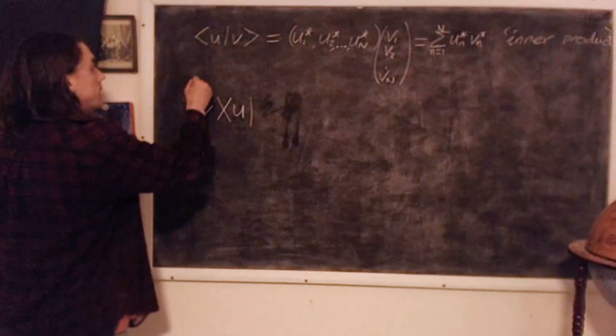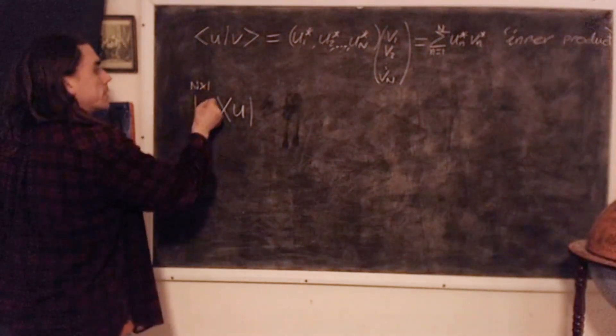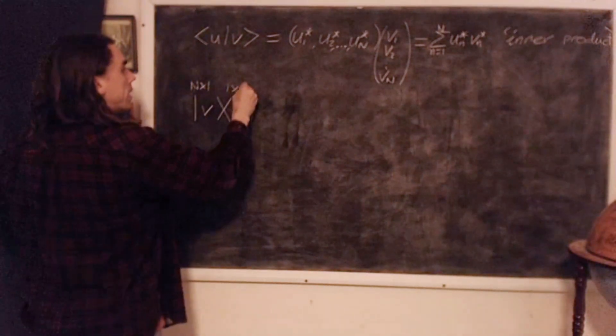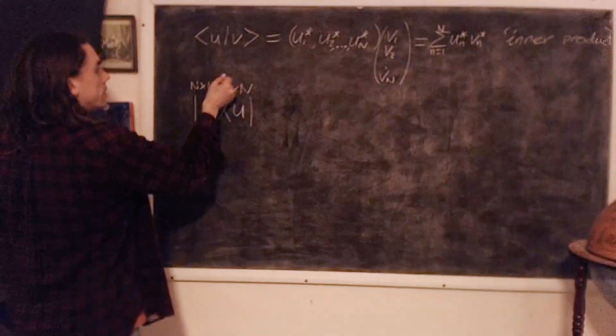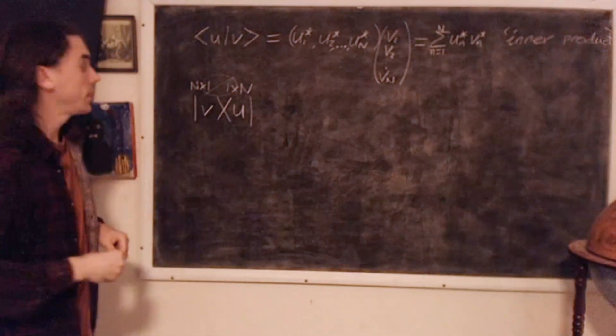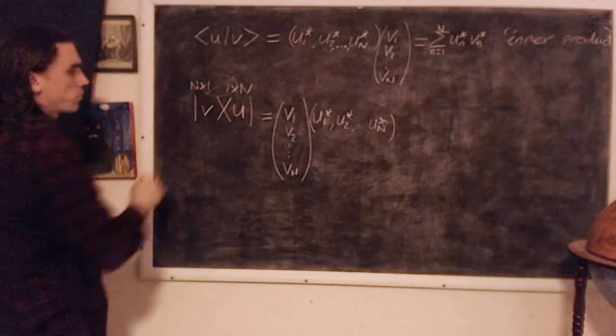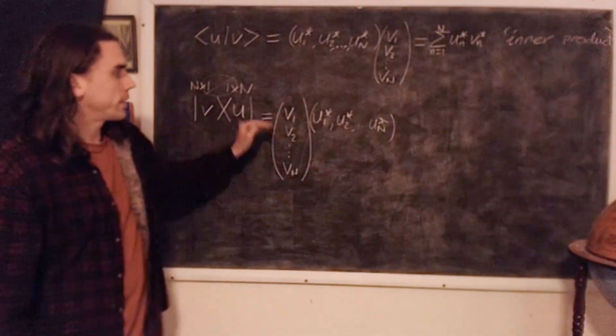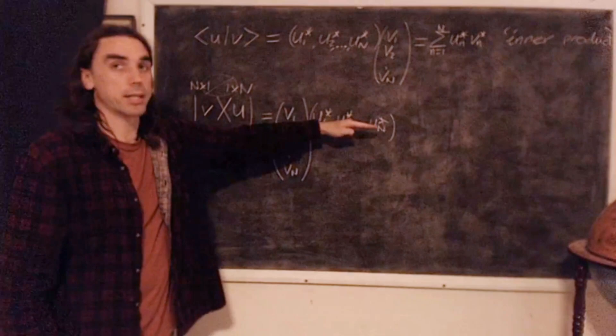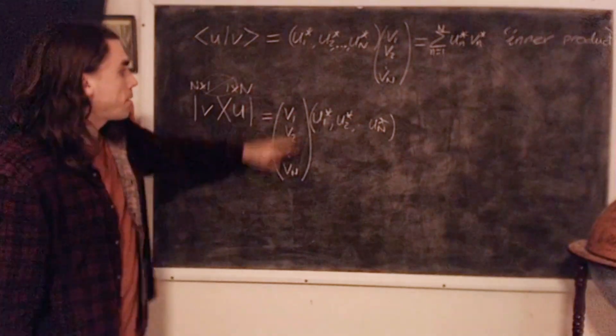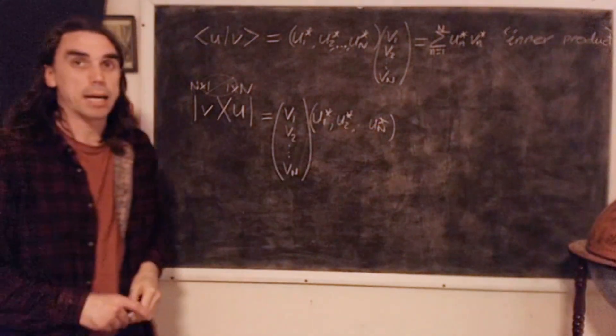So I've just written the ket V on the left of the bra U. Well, this is an n by 1 matrix. This is a 1 by n matrix. And so the result, cancelled things in the middle, should be an n by n matrix. And it comes out as follows. So we have this vector to multiply, well, this matrix to multiply by this matrix. n by 1 times 1 by n, we'll get an n by n. It looks like this.